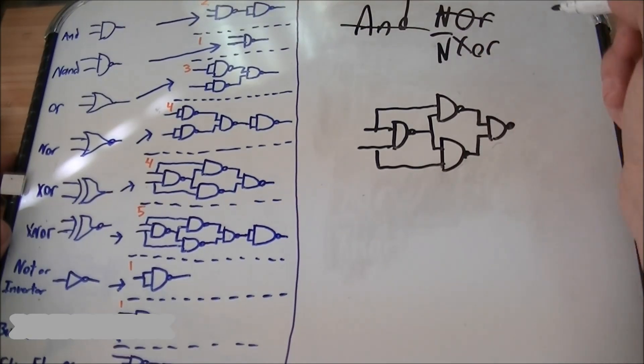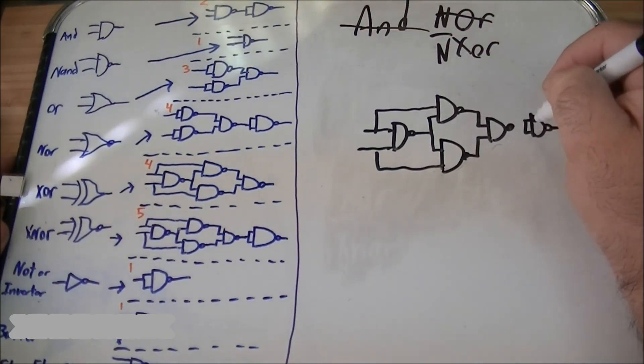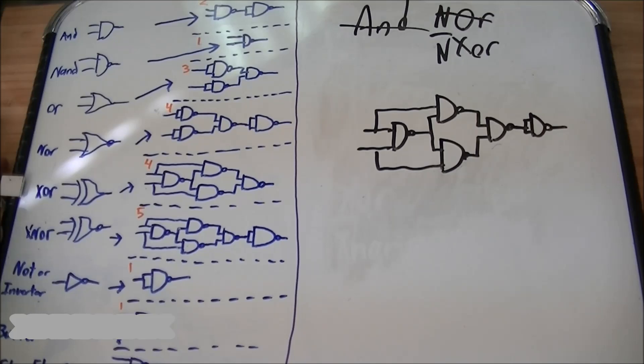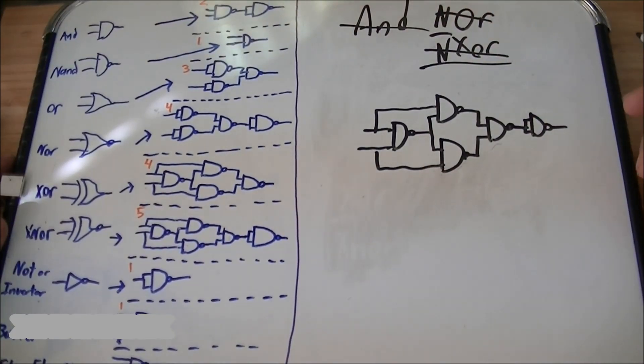Now, of course, you want to make it an XNOR. Add an inverter. You put another NAND gate here, bridge this, and there's your XNOR, or however you want to call it.